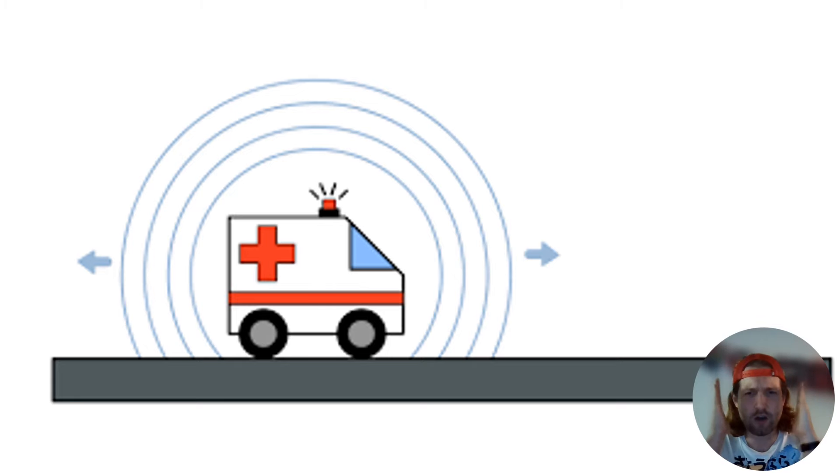We're just imagining something that's emitting a constant tone, the sound of the engine, the sound of the siren on top of the ambulance. It's emitting a constant tone, so we've got these constant wavelengths we can see being emitted.